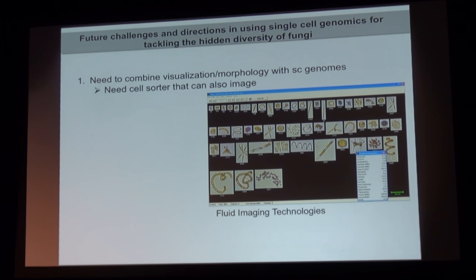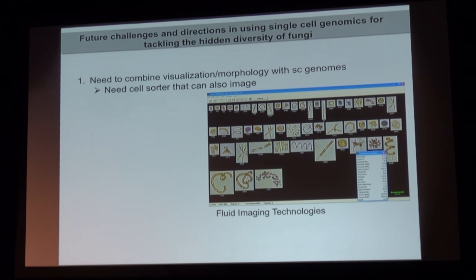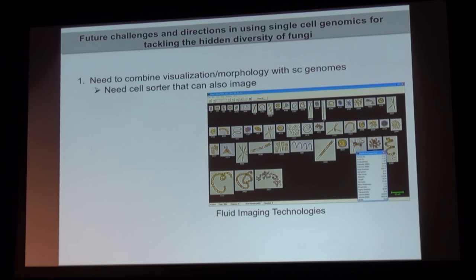There are a lot of problems and hurdles we still haven't crossed, but there's a lot of promise in applying this throughout the fungal kingdom. One issue is not being able to visualize the cells we're sequencing. There are ways of visualizing cells — this cool flow cytometer that takes pictures of organisms, the FlowCam — and you get all these cool pictures, but you can't actually capture the cells. So we need a cell sorter that can also image. If you know of one, please come talk to me.